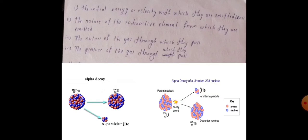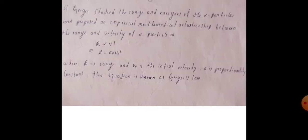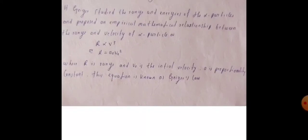Geiger studied the range and energies of alpha particles and proposed an empirical mathematical relationship between the range and velocity of alpha particles. It is given by: R is directly proportional to v₀³, or R equals a₀ v₀³, where a₀ is the proportionality constant, R is the range, and v₀ is the initial velocity. This equation is also known as Geiger's law.